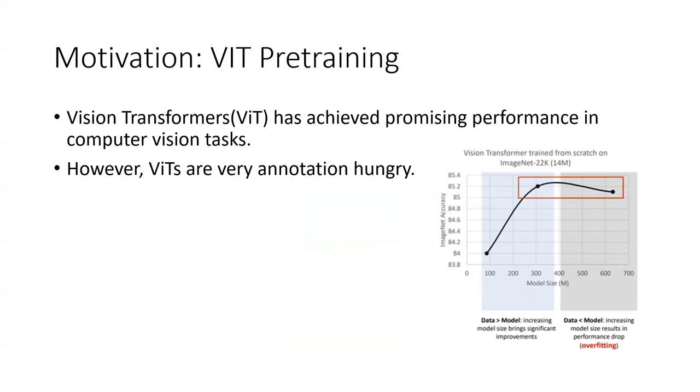Vision transformers have achieved promising results lately in this particular field. The problem with the ViT is that they are very annotation hungry. Besides them, there is a DeiT model as well which was introduced in 2021 by Hugo. This model was considered to be more efficiently trained transformer for image classification. It demonstrated that transformer models can achieve competitive performance on image classification tasks and requires less extensive training as compared to the ViT.